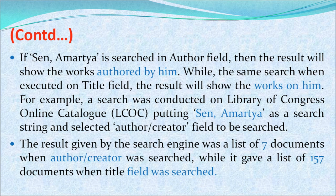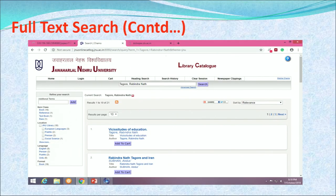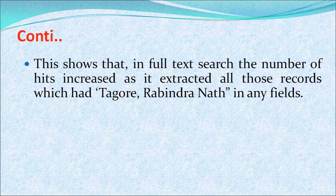For example, a search was conducted on the Library of Congress Online Catalogue (LCOC) putting 'Amrita Sen' as a search string. When the author/creator field was searched, the search engine returned a list of 7 documents. When the title field was searched, it returned 157 documents. Full-text search is a search mechanism which conducts the search on each and every field of the database and extracts all records which match with the query, as shown in a screenshot from JNU library catalogue where searching Amrita Sen increased the number of hits significantly.